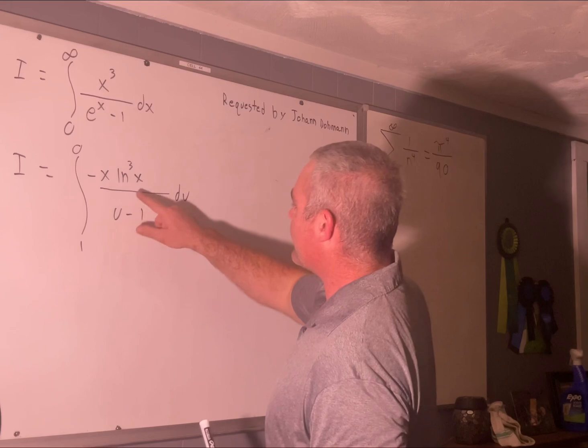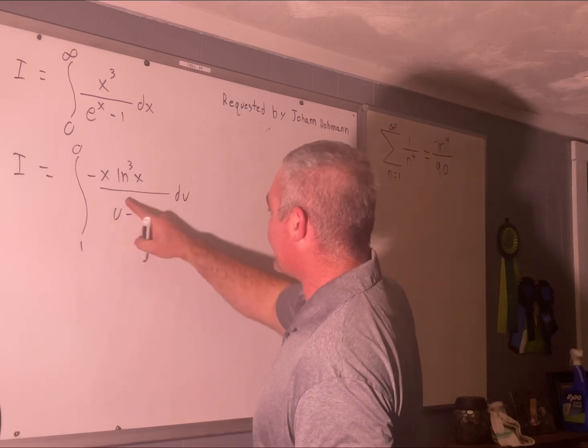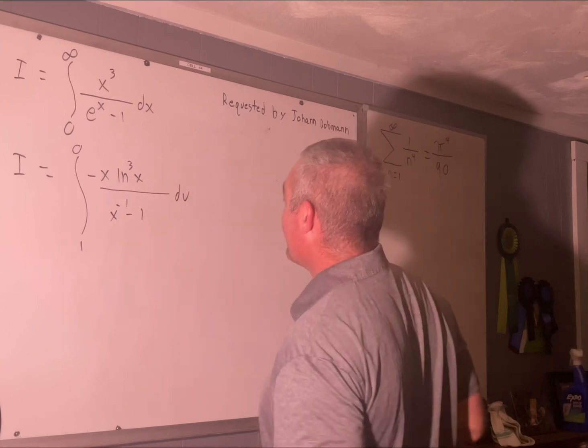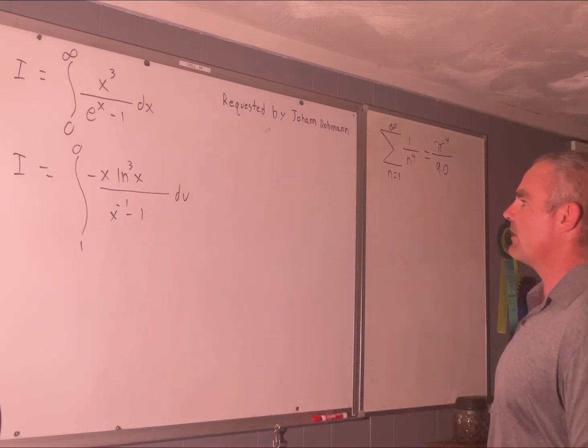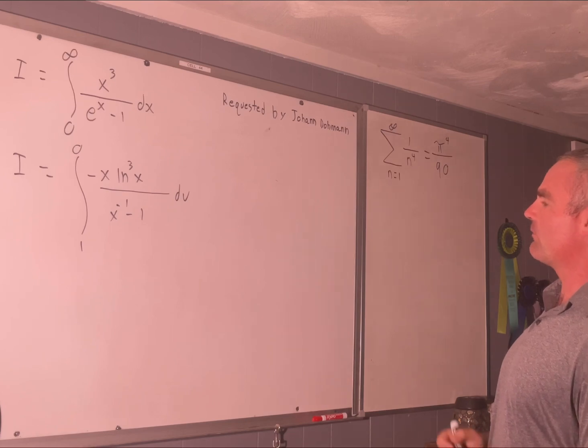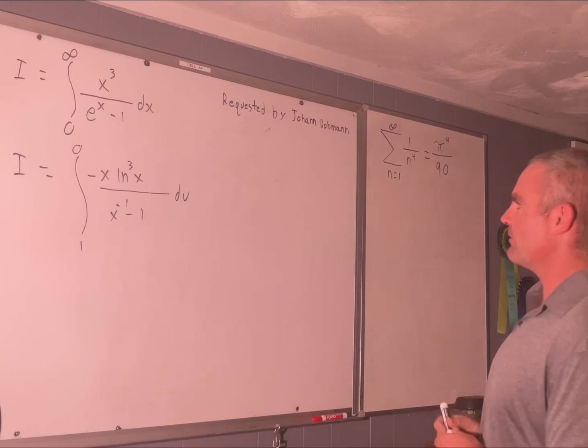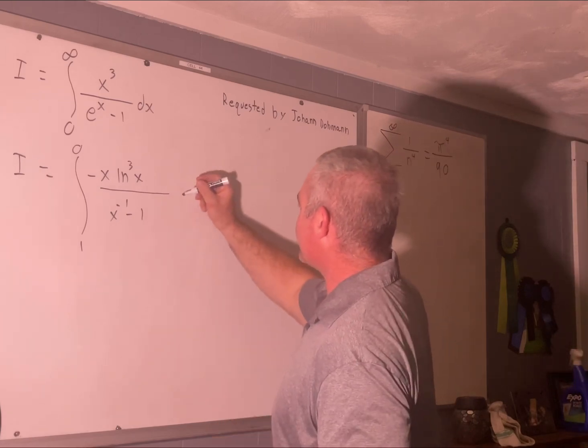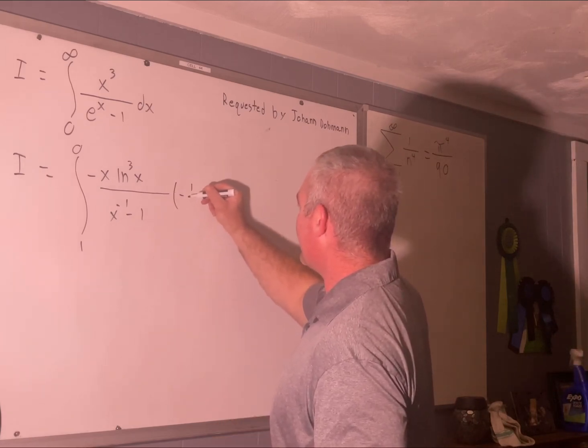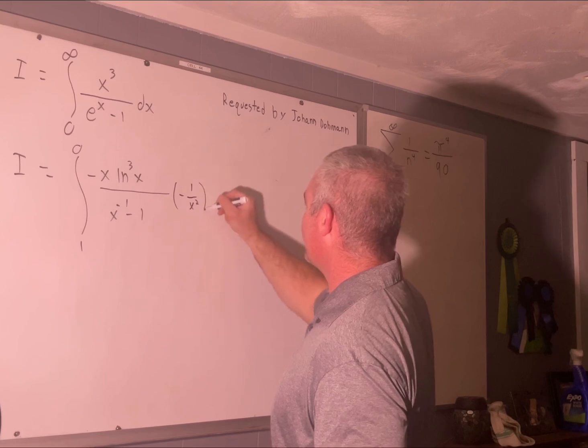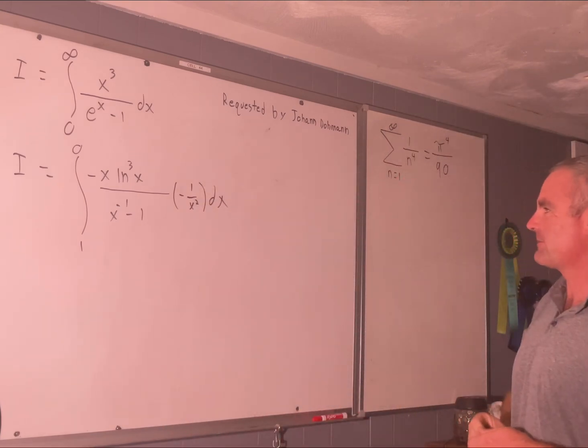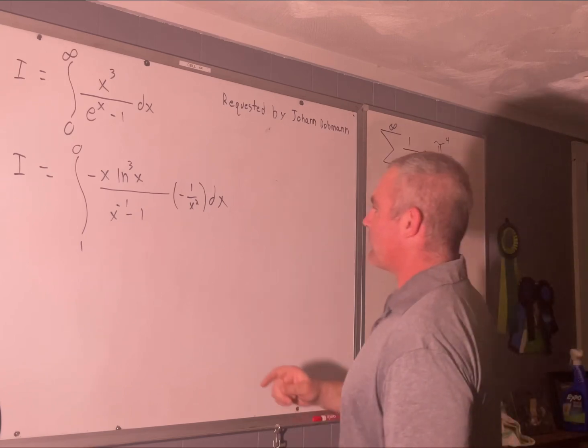And let's see, that's going to be the natural log cubed of 1 over x. What's the natural log of, that's negative natural log x cubed. So that's just going to be, we're just going to get a negative sign there. Right? Because natural log 1 over x is negative natural log x. You cube that and you'll get negative natural log cubed x.